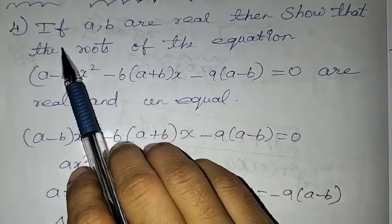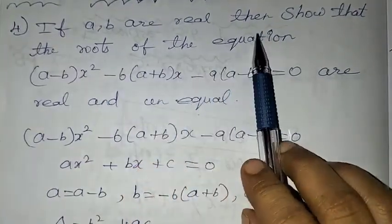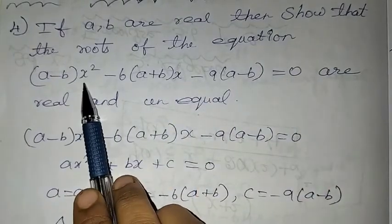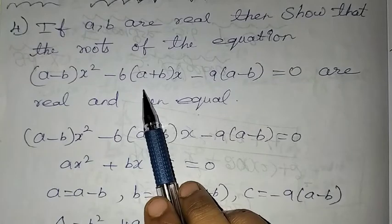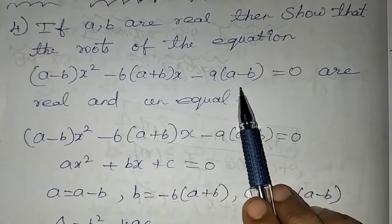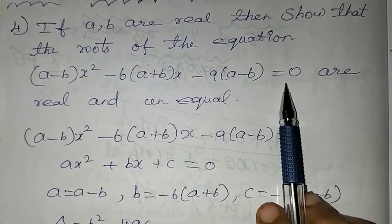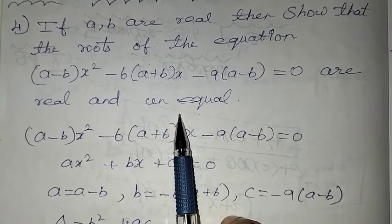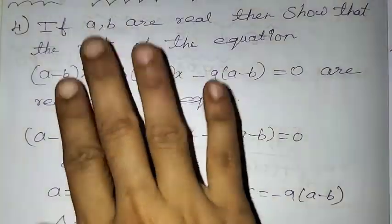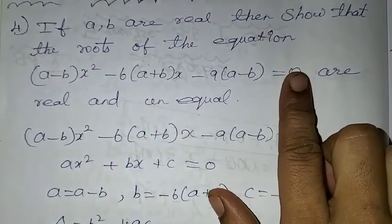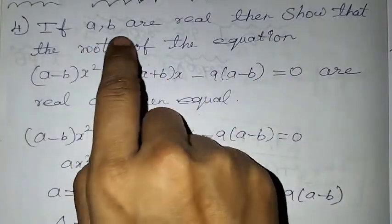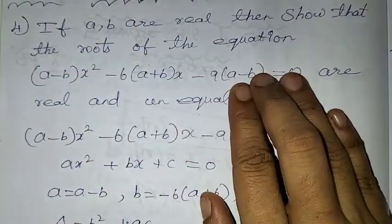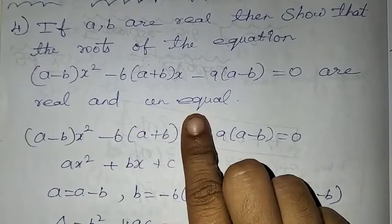If a and b are real, then show that the roots of the equation (a minus b) into x square minus 6 into (a plus b) into x minus 9 into (a minus b) is equal to 0 are real and unequal.